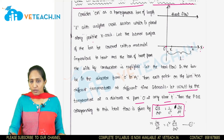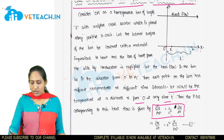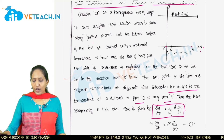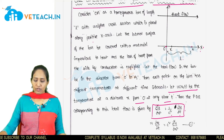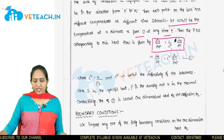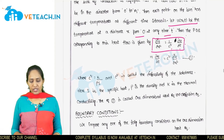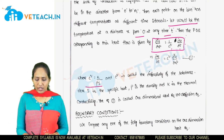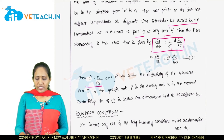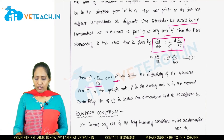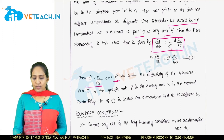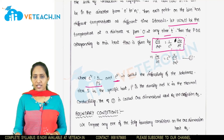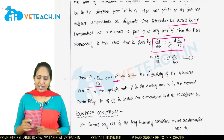From this equation, we can also write: ∂u/∂t = c² · ∂²u/∂x². Here, c² is defined as the diffusability of the substance.